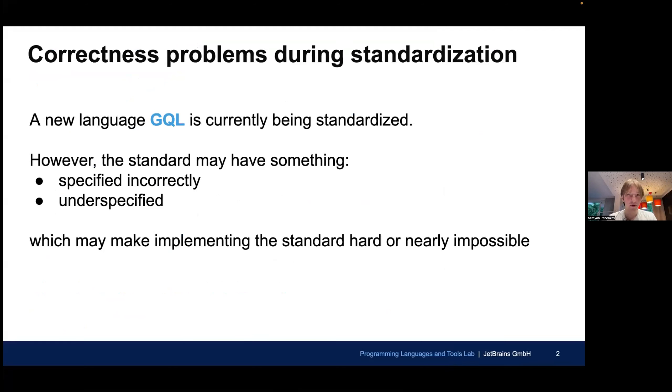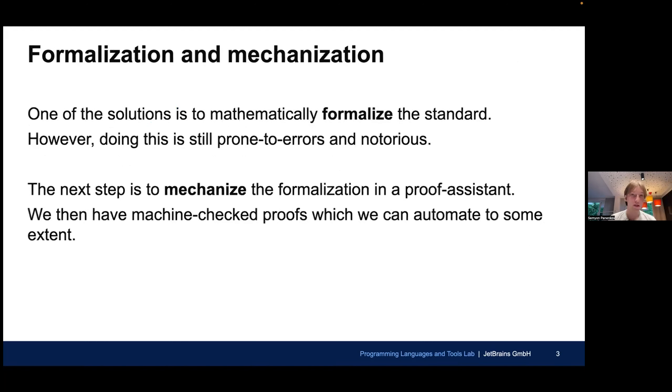GraphCoin language is a new language which is currently undergoing standardization process. However, getting standardizing correctly is hard. The resulting standard might have something specified incorrectly, it can contain mistakes, or have something underspecified. In other words, it's not really clear what have been meant and how to implement it. The standard allows too much space. And all of these issues make implementing the standard in a graph database hard or nearly impossible if you have something contradictory in your standard.